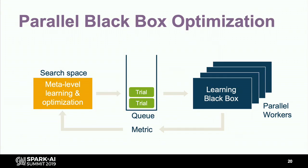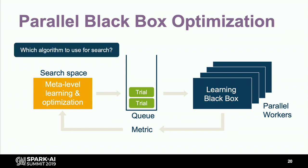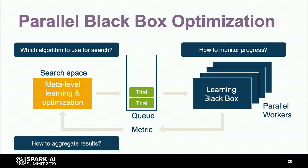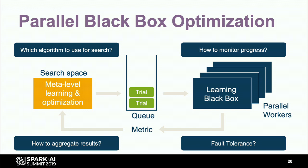If we want to scale this horizontally, we'd ideally add a queue between these two parts so we can generate trials ahead of time. Every time a worker finishes, it takes a new trial, reports the metric back to the meta-level learning algorithm, which generates a new trial for the queue, and continues. But running this on a real system raises questions: which algorithm should we use? How do we monitor progress across distributed machines? How do we collect logs and metrics? What about fault tolerance — what if a worker fails or the optimization part fails? Hyperparameter tuning can take days if fully automated, so we don't want to lose progress.